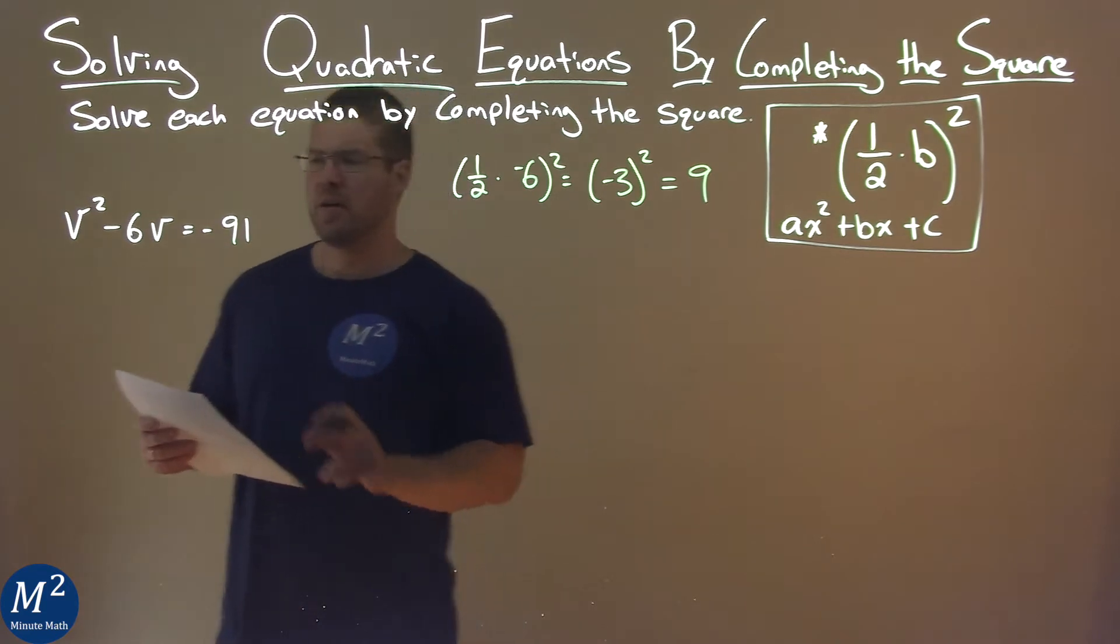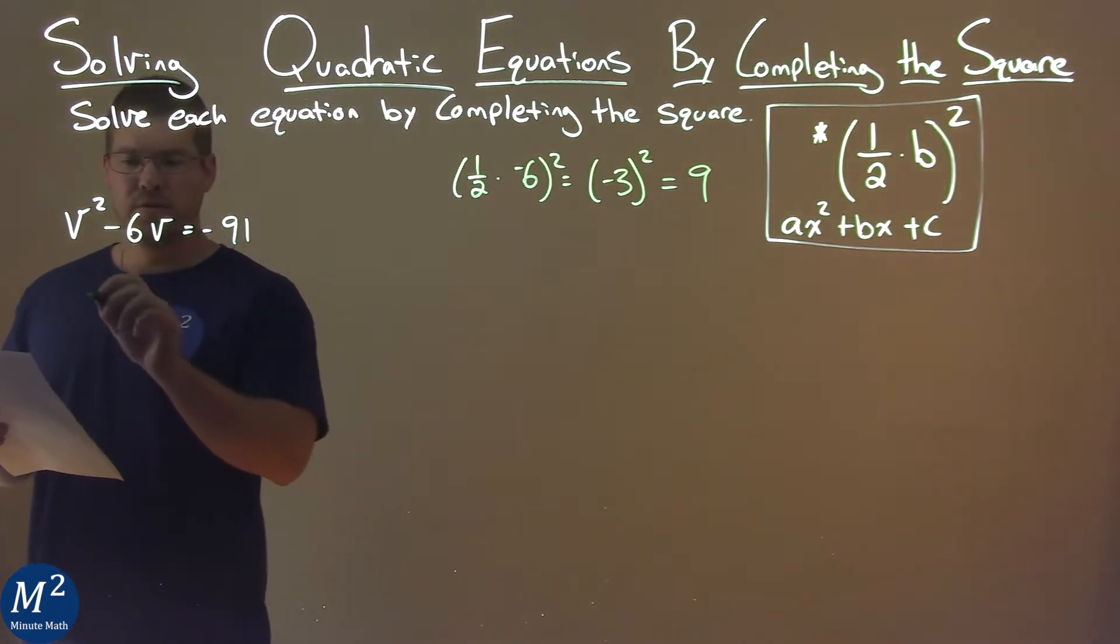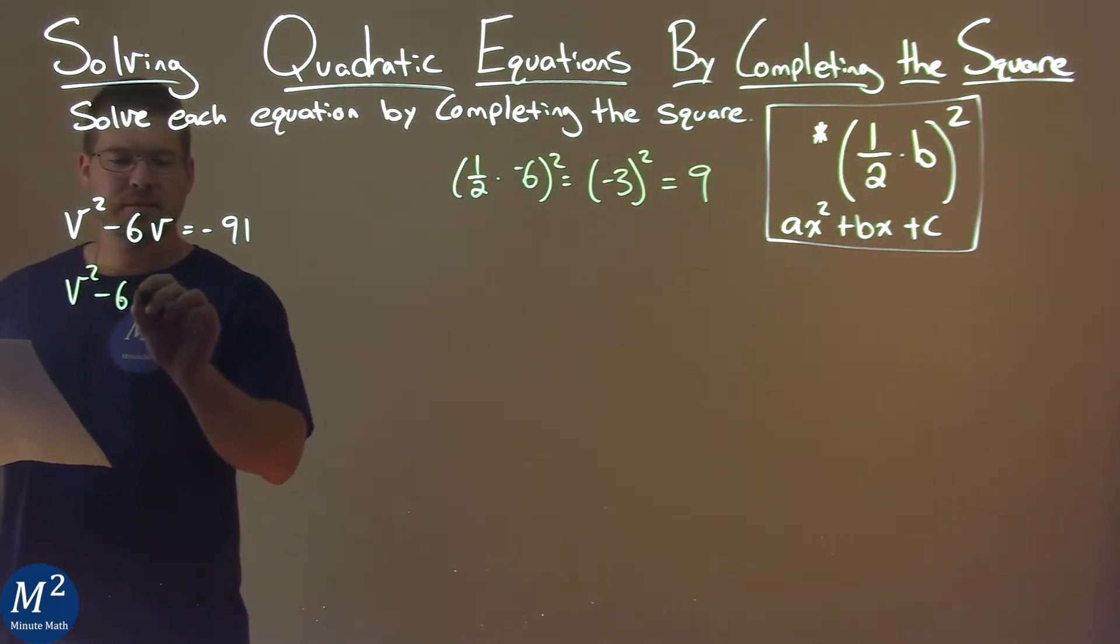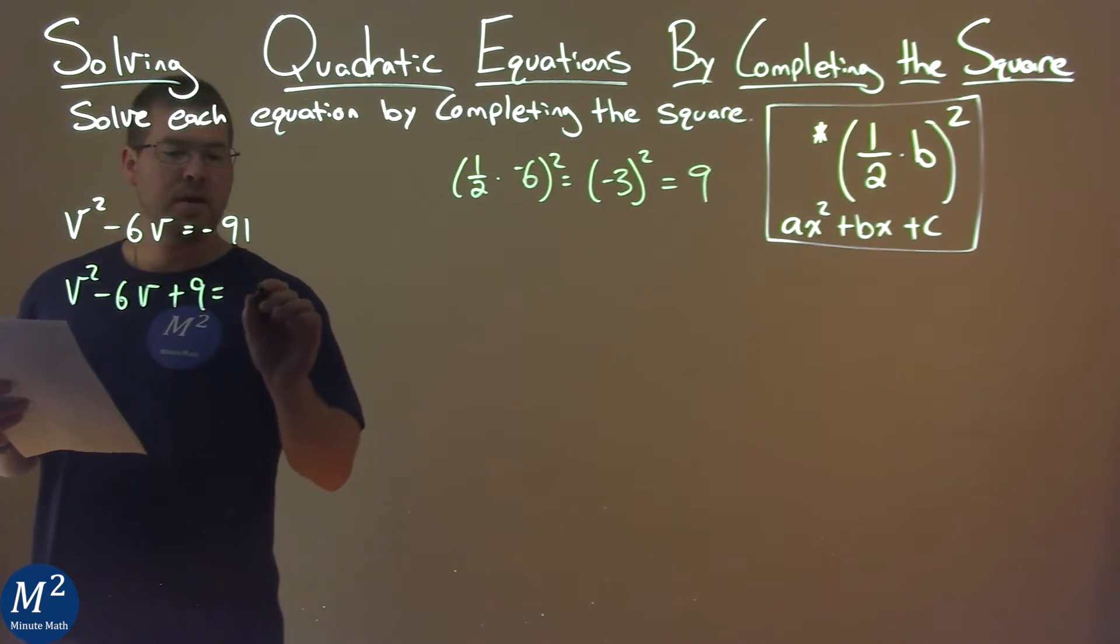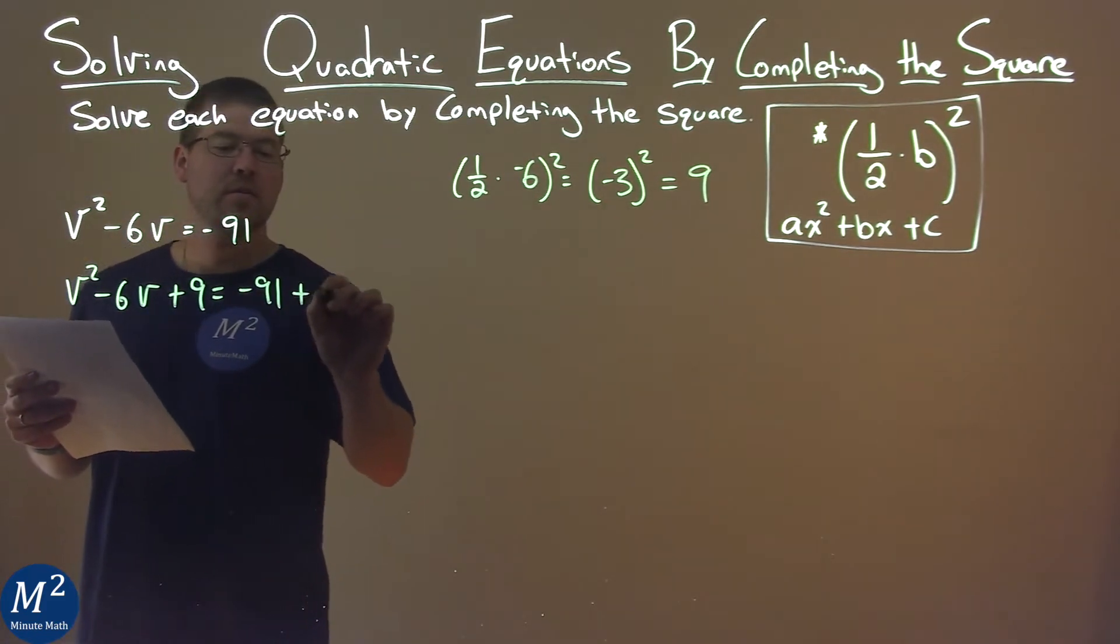So I'm going to take that 9 value and I'm going to add it to both sides of the equation. v squared minus 6v plus 9 equals negative 91 plus 9.